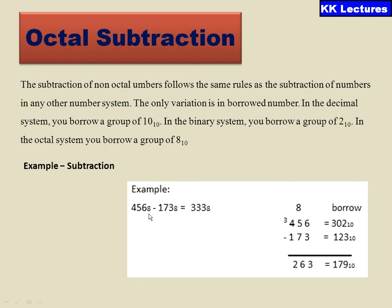If you see the example here, 456 minus 173 is giving 263. How about is this giving? Let us see here. As we know that 6 minus 3 is always a 3, and we are representing the 3 here. Moreover, now 5 minus 7 is not possible, so I would like to borrow 1 from here.